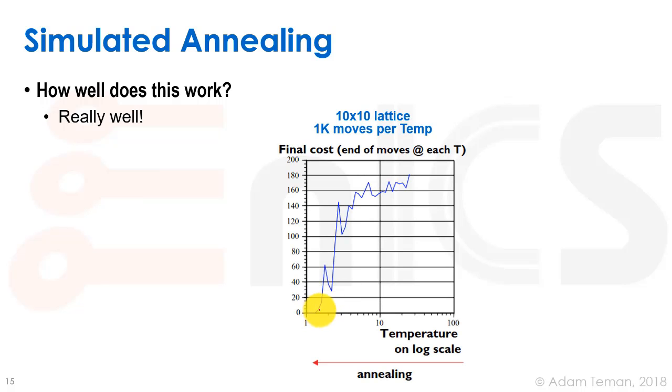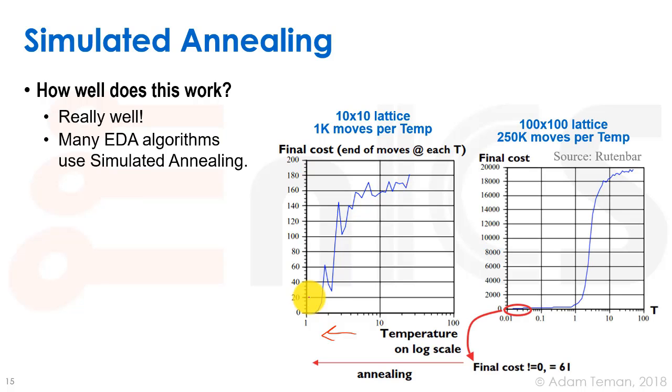Let's see: does this work? Well, yes, it works really well. We can see here that as we take our temperature from high to low - we're going this way, we're going to the left in this case - we start with a high wire length. This is for a 10 by 10 lattice, a 10 by 10 grid, with a thousand moves per temperature. We start going down until we get a real low wire length.